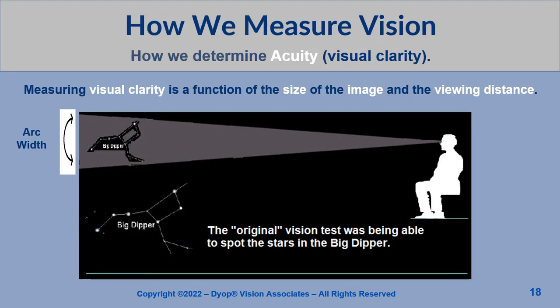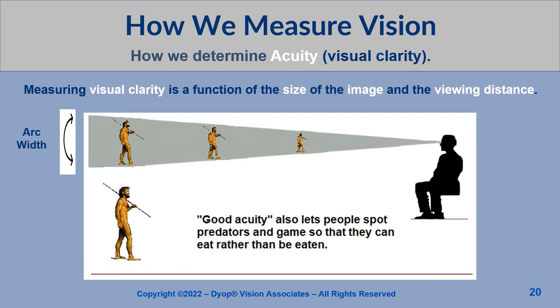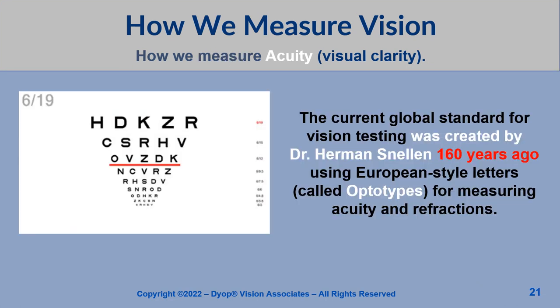Measuring visual clarity is a function of the size of the image and the viewing distance. The original vision test was being able to spot the stars in the Big Dipper. The acuity endpoint is the smallest arc-width image identifiable at a specific distance. Good acuity also lets people spot predators and game. The current global standard for vision testing was created by Dr. Herman Snellen 160 years ago, using European-style letters for measuring acuity and refractions.